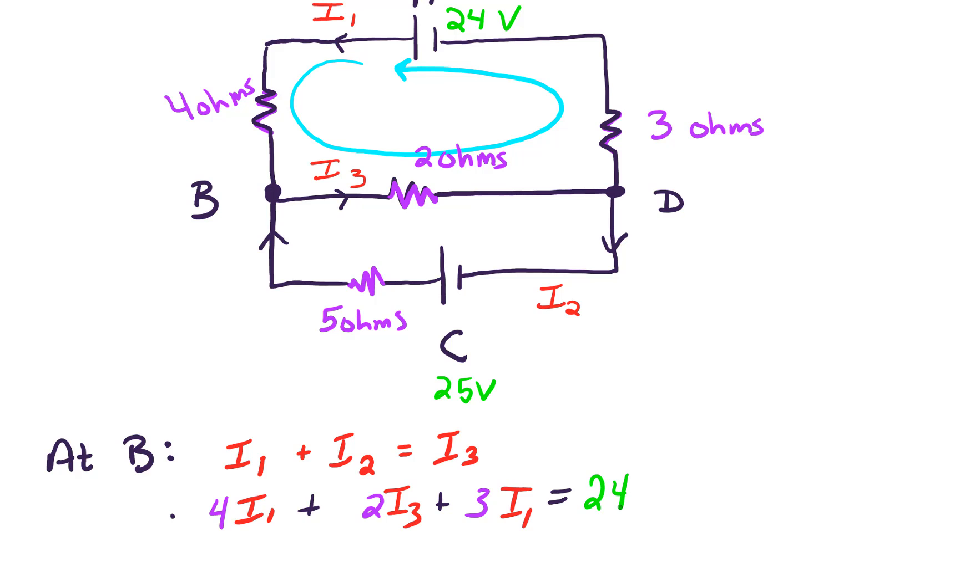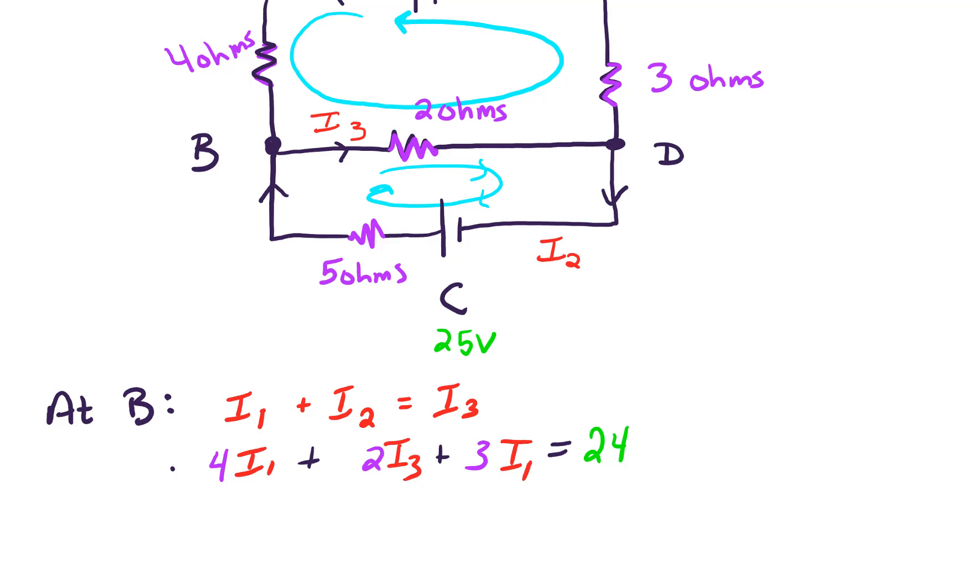On the bottom loop, let's see what we have down here. So this one's going in a clockwise direction. For that bottom loop, we have 2 ohms times I3. And on the bottom edge here, we've got 5 ohms times I2. And adding those up, the sum of the current times resistance has to equal the total voltage, which we said was 25 for that bottom loop.